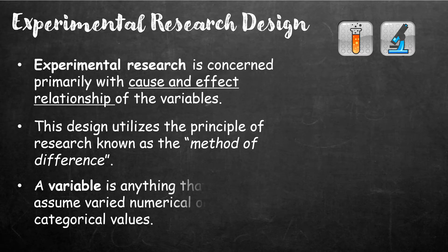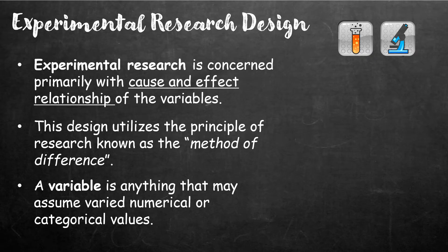So, what is a variable? A variable is anything that may assume varied or numerical or categorical variables. Ibig sabihin, tumutukoy ito sa anumang bagay na pwedeng i-observe o i-measure tulad ng edad, kasarian, oras, at iba pa.